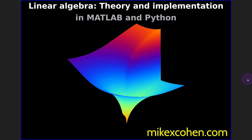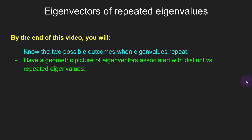In the previous video I showed that when there are two distinct eigenvalues of a matrix, their corresponding eigenvectors are also distinct in the sense of being linearly independent. But what happens when there are two identical eigenvalues of the same matrix? The goal of this video is to figure out that question.